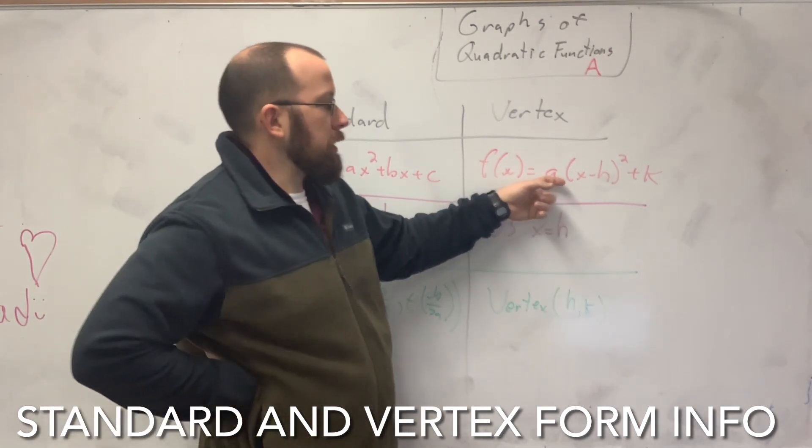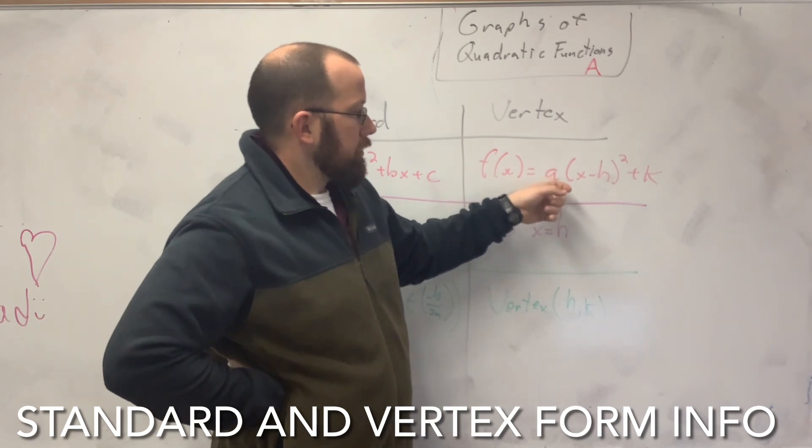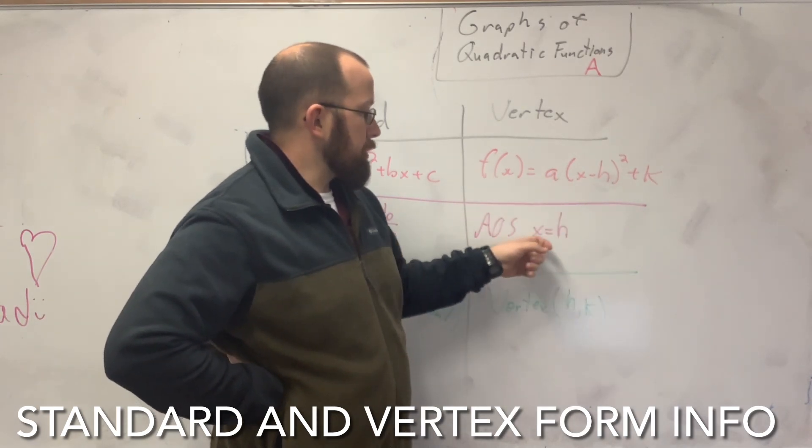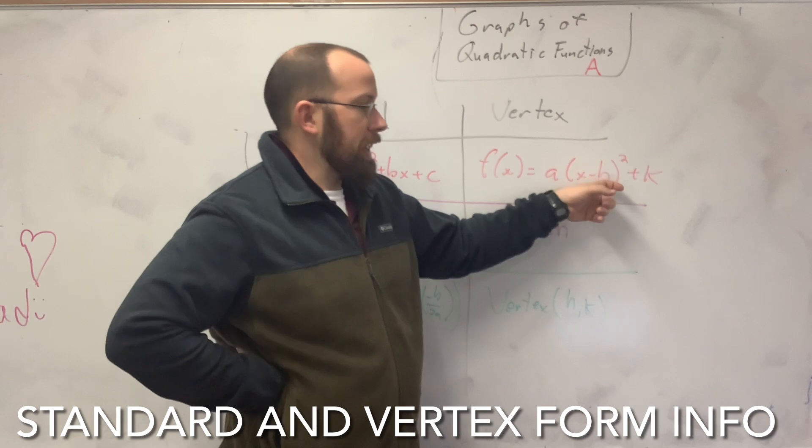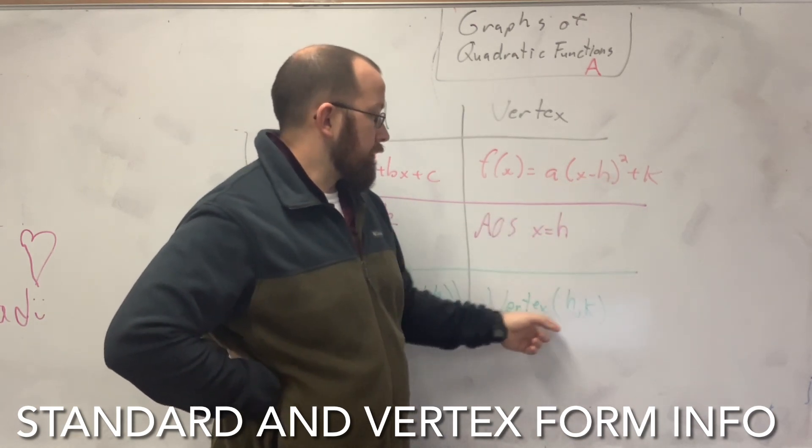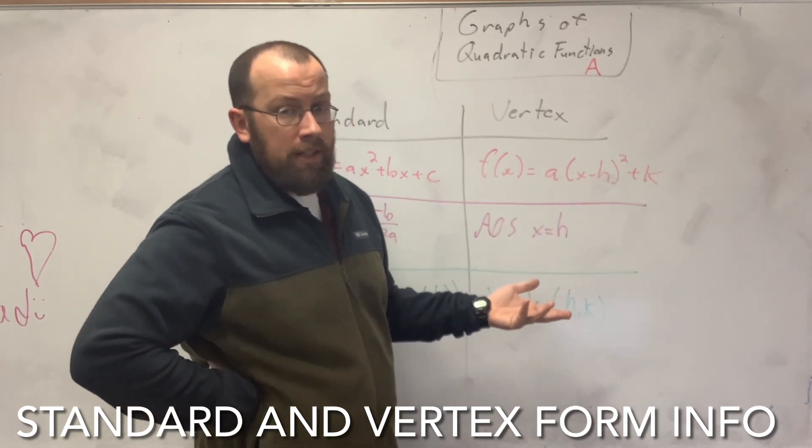Over here with the vertex form, it looks much different. The axis of symmetry is just x equals h because the vertex is just the (h,k), hence the vertex form.